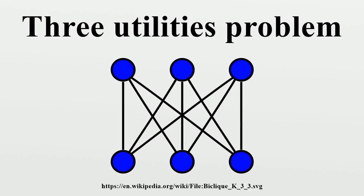The problem is part of the mathematical field of topological graph theory, which studies the embedding of graphs on surfaces. In more formal graph-theoretic terms, the problem asks whether the complete bipartite graph K3-3 is planar. This graph is often referred to as the utility graph in reference to the problem, and has also been called the Thomson graph. It is equivalent to the circulant graph CI6.